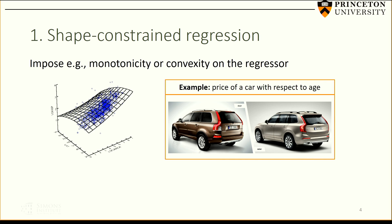You may wonder what the point of these problems is. The most common application is polynomial optimization. But today I'm going to tell you about two different problems in machine learning that can be cast as problems of this type. The first one is shape-constrained regression. I have a bunch of data points, and I want to fit a polynomial regressor that minimizes least squares, but with a shape constraint on the polynomial regressor.